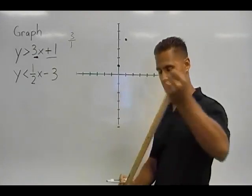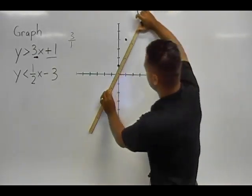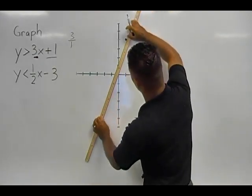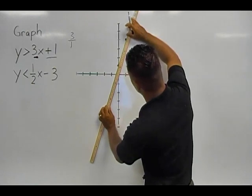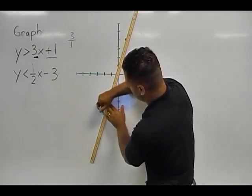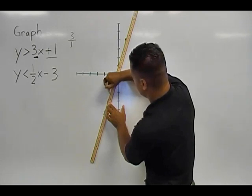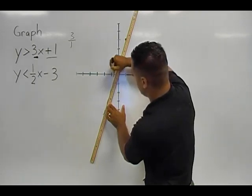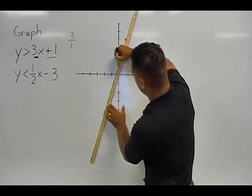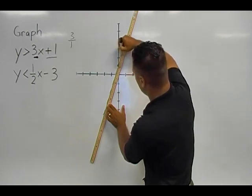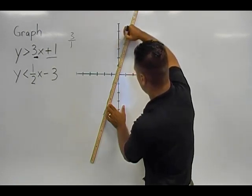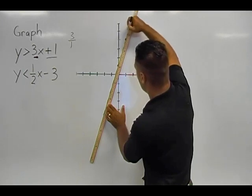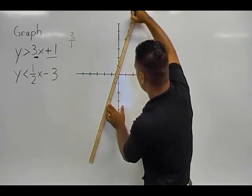Now that we have two points, you would take a ruler, line up those two points and make a dotted line passing through those two points. Now the reason we make a dotted line is because the sign says it is greater than. If it's a greater than or a less than symbol, we have to make a dotted line because the values actually do not include any points on the line. The points are going to be located to one side or the other.